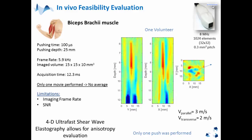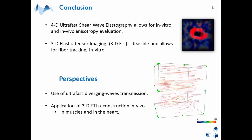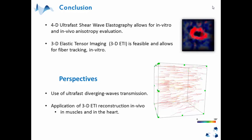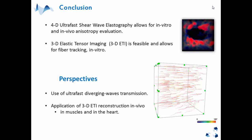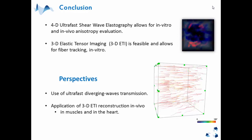To conclude: 4D ultrafast shear wave elastography allows for in vitro and in vivo anisotropy evaluation. 3D elastic tensor imaging was shown to be feasible and allows for fiber tracking in vitro. As perspectives, we want to use ultrafast diverging wave transmission to increase our field of view, which will allow us to increase the number of coherent compounding emissions and improve image quality. This will enable us to apply the ETI reconstruction in vivo, in muscles and especially in the heart muscle. Thank you for your attention.